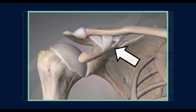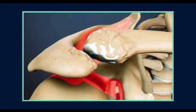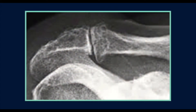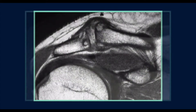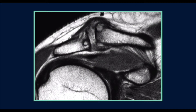Due to the large forces passing from the arm to the axial skeleton through the relatively small AC joint, it is commonly affected by wear and tear arthritis, which can lead to pain, stiffness and sometimes rotator cuff problems.